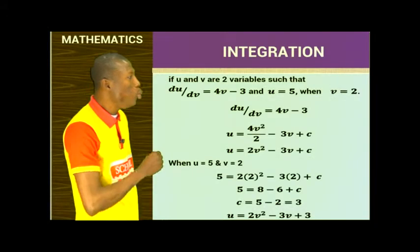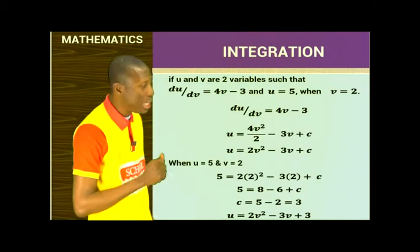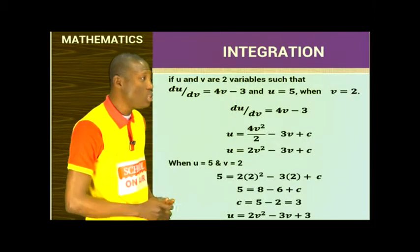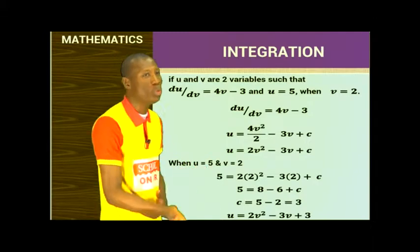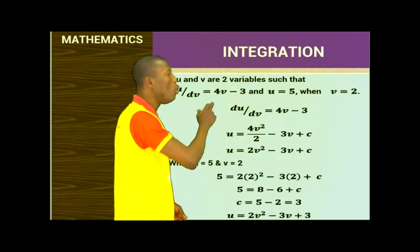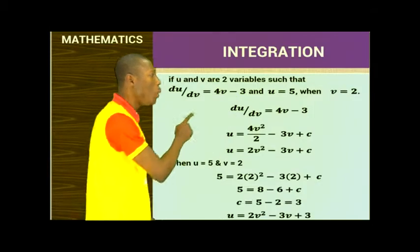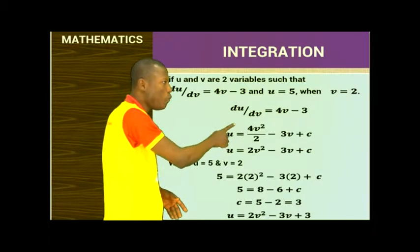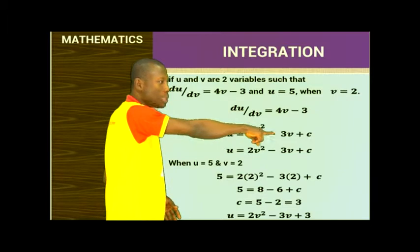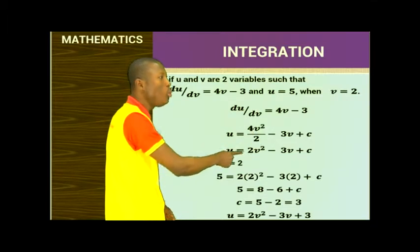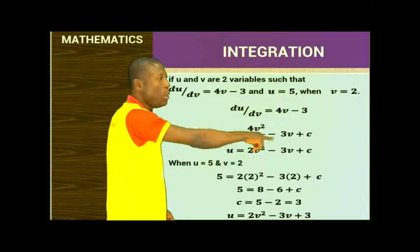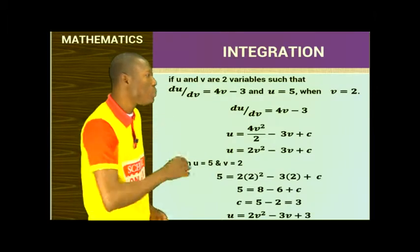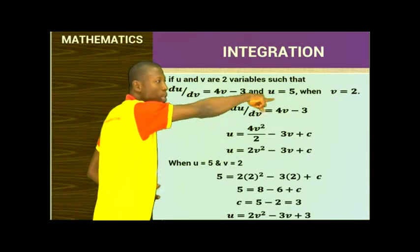Now the next problem: du/dv equals 4v minus 3, and u equals 5 when v equals 2. We are differentiating u with respect to v. Since du/dv equals 4v minus 3, it means u is the integral of this function. So u equals 4v squared over 2 minus 3v plus C, which simplifies to u equals 2v squared minus 3v plus C. We have u and v as a coordinate: (5, 2).